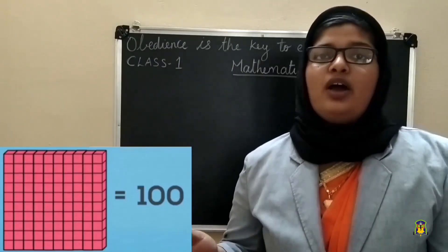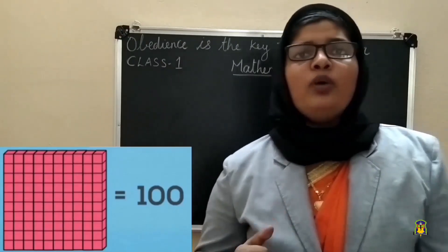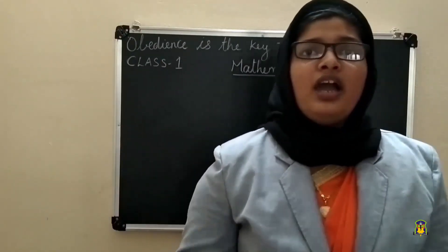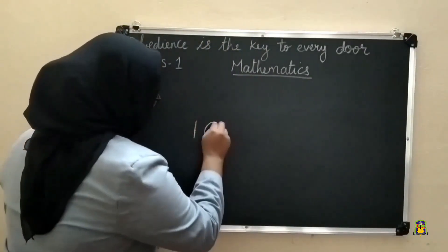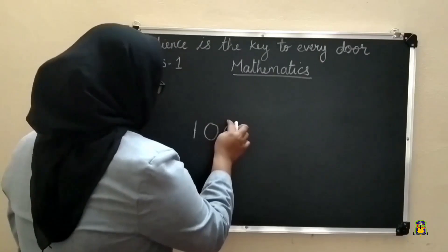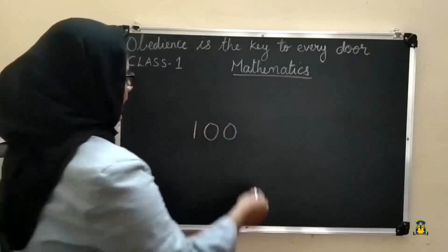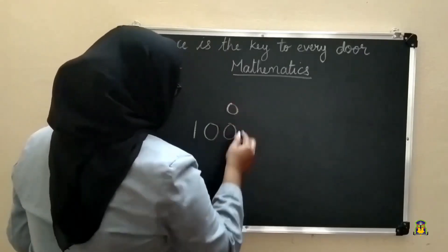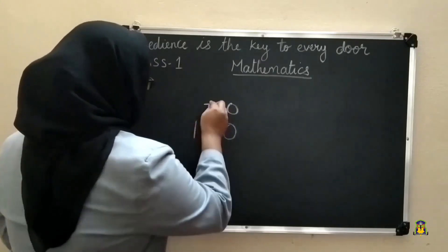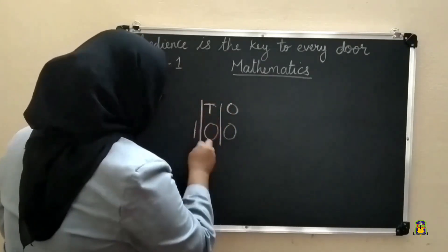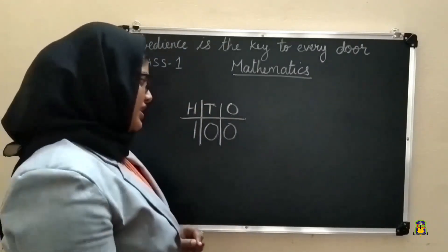You can see how we represent this by blocks. Ten groups of 10 is 100. This is 100. How will we write 100? 1, 0, 0. In the ones place, 0 is there; in the tens place, another 0 is there; and in the hundreds place, 1 is there.